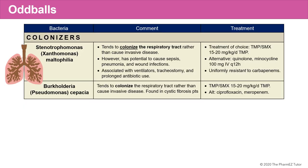Let's discuss the so-called oddball bacteria. The first group are colonizers, including Stenotrophomonas or Xanthomonas maltophilia. This bacteria tends to colonize the respiratory tract rather than cause true invasive disease, but it does have the potential to cause sepsis, pneumonia, and wound infections. It's associated with ventilators, tracheostomies, and prolonged antibiotic use. When you get a culture for Stenotrophomonas maltophilia, it's very important to determine whether it's colonization or true infection — most times it's just colonization requiring no treatment. If it is a true infection, the drug of choice is trimethoprim-sulfamethoxazole at 15 to 20 mg/kg/day of the trimethoprim component in divided doses; alternatively, quinolones or IV minocycline can be used. This bacteria is uniformly resistant to carbapenems.